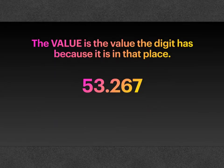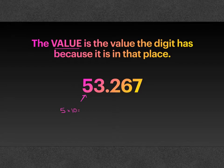The value is the value that a digit has because it is in that place. So if we're looking for the value of the five, it's a five but it's in the tens place, so the value of the five is fifty. If we're looking for the value of the three, it is a three in the ones place, so it is a value of three.